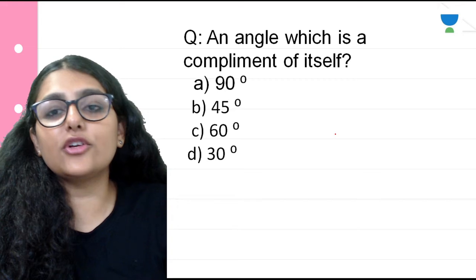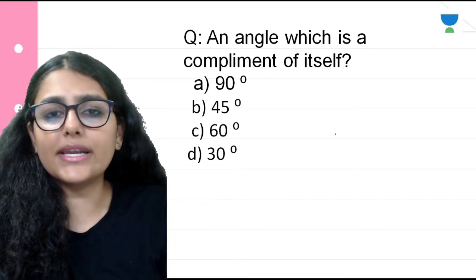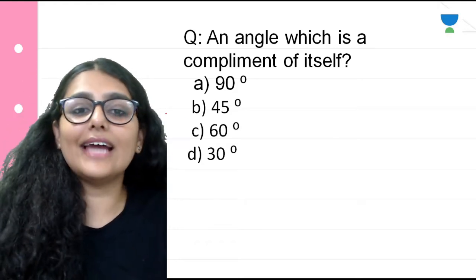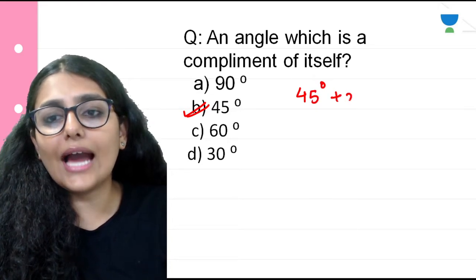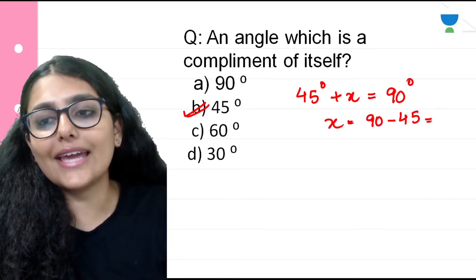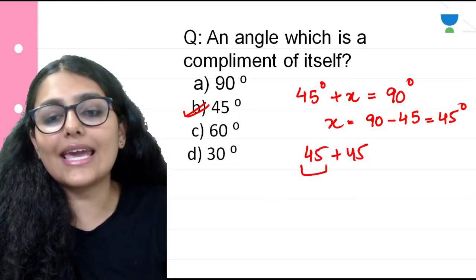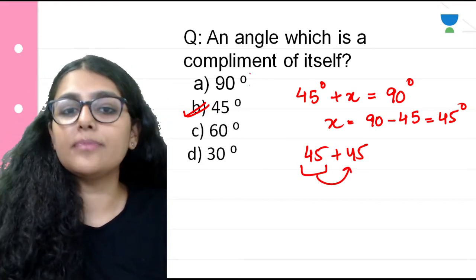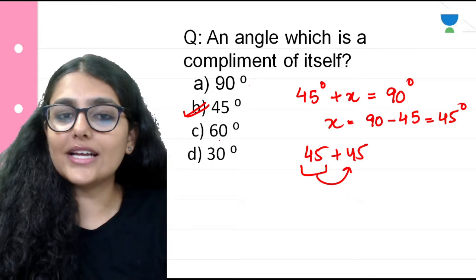Find an angle which is a complement of itself. The options are 90 degrees, 45 degrees, 60 degrees, and 30 degrees. The right answer is option B, that is 45 degrees. What I add in 45 degrees should give 90 degrees — so x equals 90 minus 45 which is again 45 degrees. We know 45 plus 45 is 90, so 45 degrees is the angle which is its own complement. 60 plus 60 is 120, and 30 plus 30 is 60, so the right answer is B.